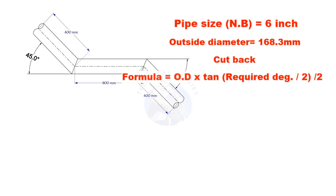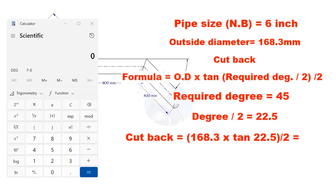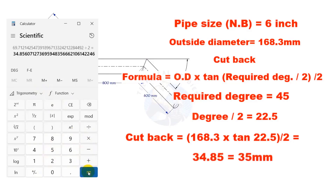Cutback is OD multiplied by tan of half the degree, divided by 2. Here, the required degree is 45. Half of 45 is 22.5. Let us calculate. The cutback is nearly 35 millimeters.